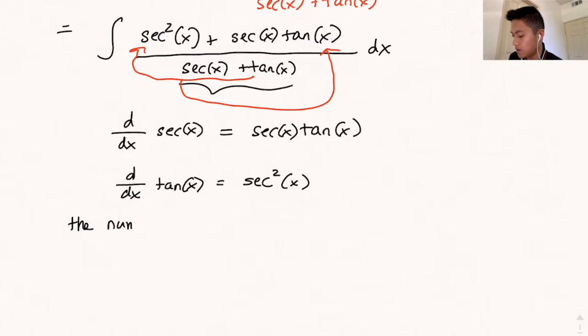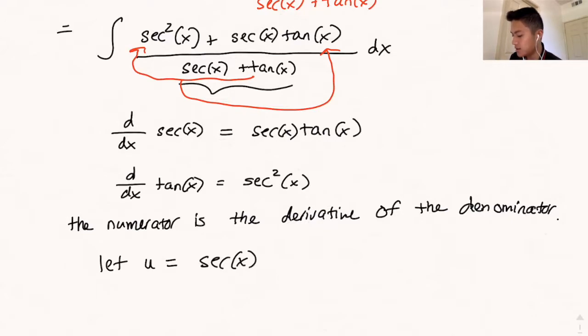Let u equal secant of x plus tangent of x. So we're saying u is a function of x, which is equal to secant x plus tangent of x.